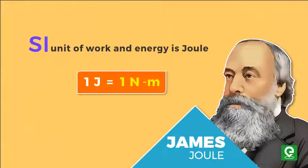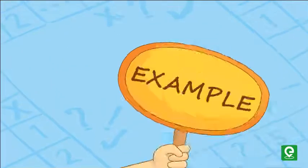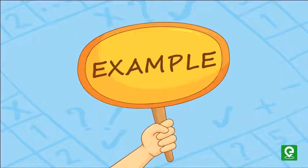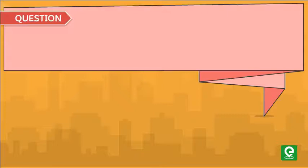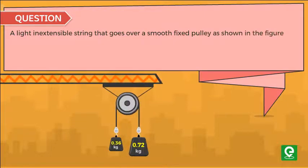Let's solve an example to understand the method of calculating work. Question: A light inextensible string that goes over a smooth fixed pulley as shown in the figure connects two blocks of masses 0.36 kg and 0.72 kg.